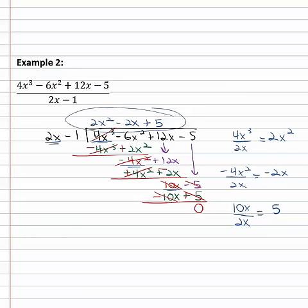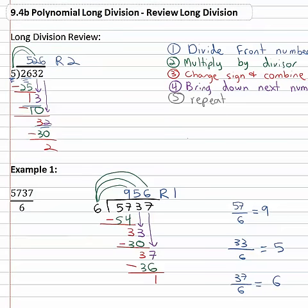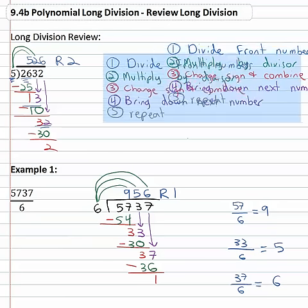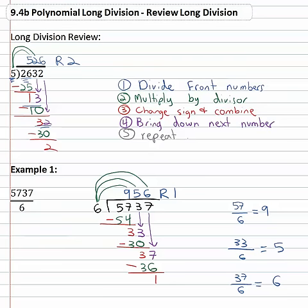Polynomial long division goes through the exact same steps as numerical long division: divide the front terms, multiply by the divisor, change the sign and combine, bring down the next term, and repeat. Just like long division of whole numbers, we can do long division of polynomials.